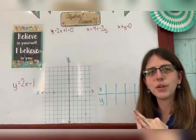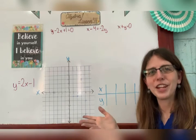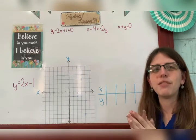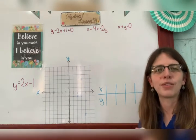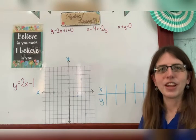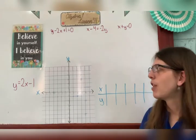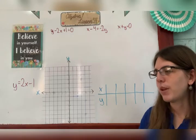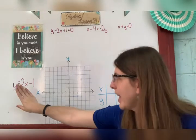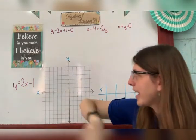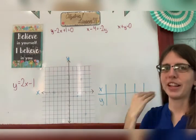They all have two variables and are all in the first degree, so they're all linear equations. If you were to solve for y based on whatever you choose for x and then graph them, you'd see that. So that's exactly what we're going to do. I've got three examples for you. We're going to start with y equals negative 2x minus 1.